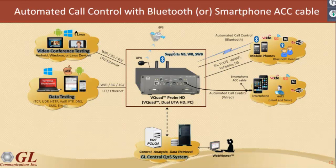There are two ways to set this up: either a unit like this, or a PC with our Dual UTA connected to it. This unit is very nice because it's portable. It can go in a car or on a bus. You can get power directly from the vehicle, set up a battery, or put it in a lab. It's just a black box — nobody knows what it is and nobody's going to touch it.